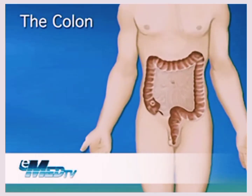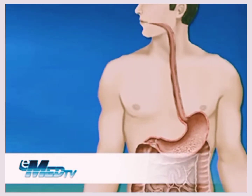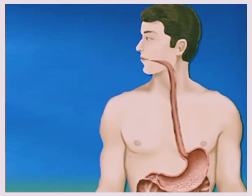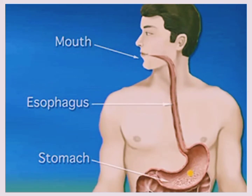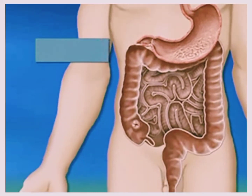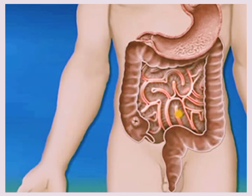The colon, also known as the large intestine, is part of the digestive system or food pathway. When you eat, food travels from the mouth into the stomach through a hollow tube called the esophagus. From the stomach, food enters the small intestine, another hollow organ where digestion and absorption of nutrients occurs.